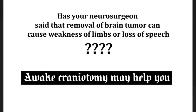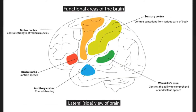Before I explain awake craniotomy, let me explain the functional areas of the brain. All parts of the brain are functional, but some parts are more functional than others. For example, the area marked in red is called Broca's area and it controls one's ability to speak. The area marked in orange is the motor cortex, which controls the motor strength of muscles. The area marked in yellow is the sensory cortex, and the green area is called Wernicke's area, which controls one's ability to comprehend or understand.